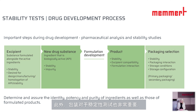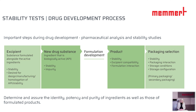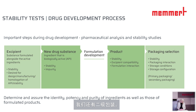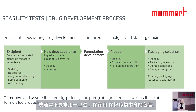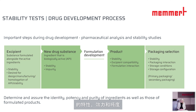Packaging is very important for stability testing and has to be considered. We have primary packaging, which could be ampoules, vials, containers, or blister packaging — that is the packaging in direct contact with the dosage form. And we have secondary packaging, which is used as an additional layer of packaging, normally not required for hygiene, preservation, or protection of the drug itself, and it will not be in direct contact with the drug. It is important to determine and assure the identity, potency, and purity of the ingredients as well as those of formulated products.